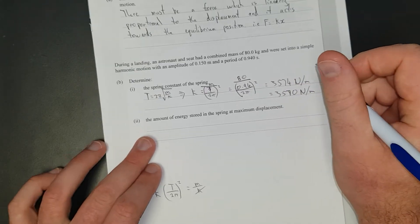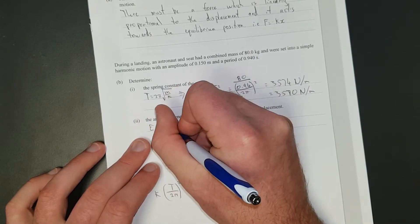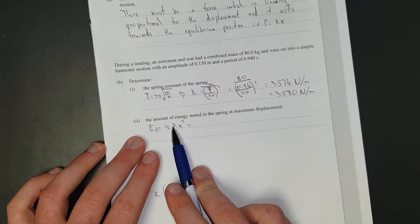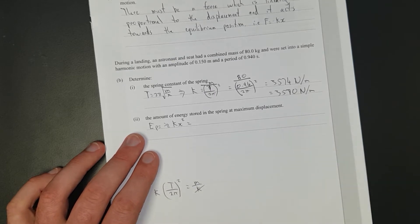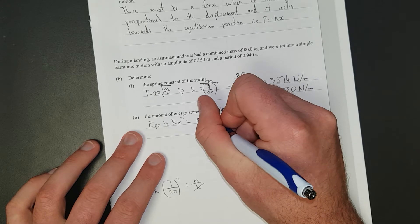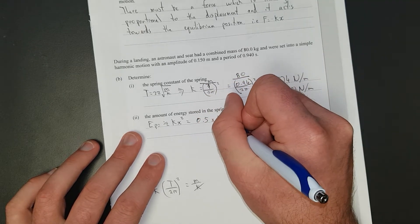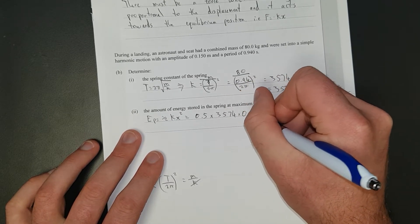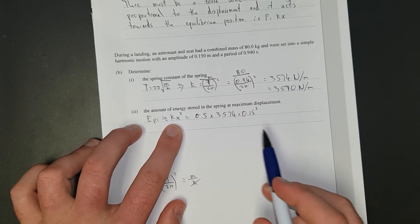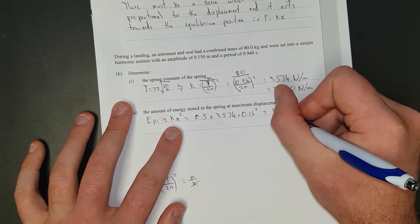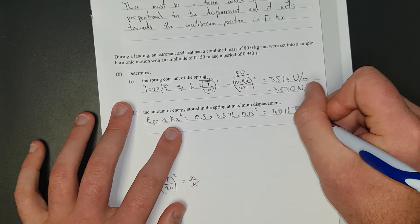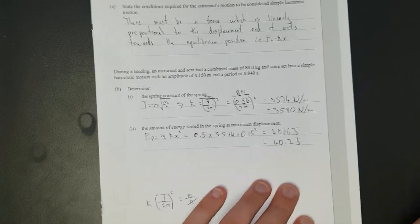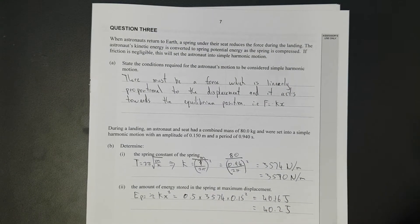The amount of energy: elastic potential energy equals half K X squared. You've got to have the K there to figure it out, it's ruthless. 0.5 times 3,574 times 0.15 squared because that's the amplitude, the maximum displacement of the spring. That gives us maximum energy of 40.16 joules. I'll round it to 3 significant figures because the minimum is three.